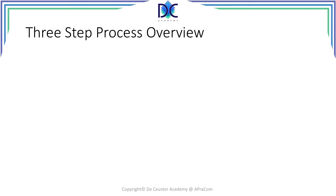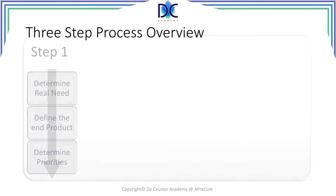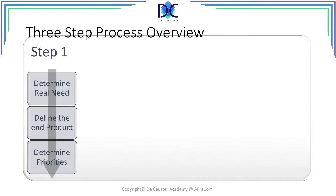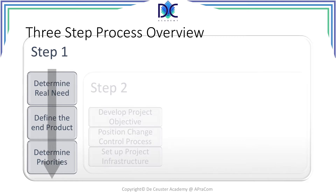The three-step process overview shows you step one, which is composed of three sub-steps. The first one is to determine the real need — here we will identify the real need that will be addressed by the project. We will define how the end product will look like. And finally, we will determine the priorities that have an impact on this project.